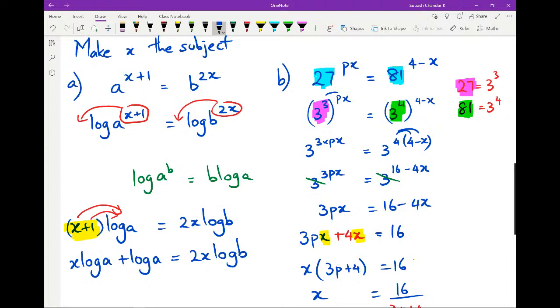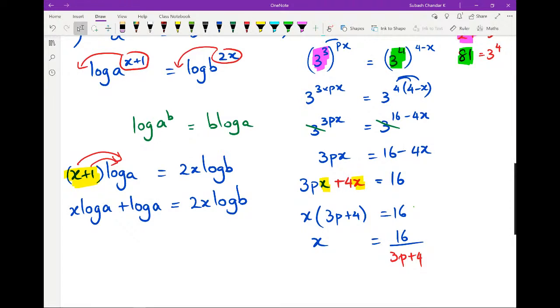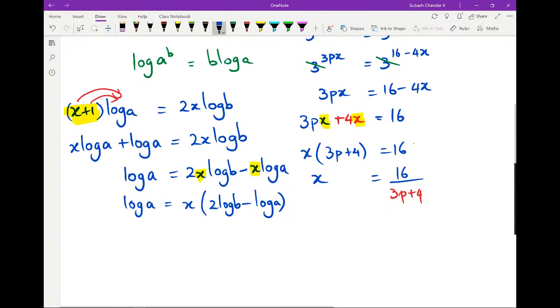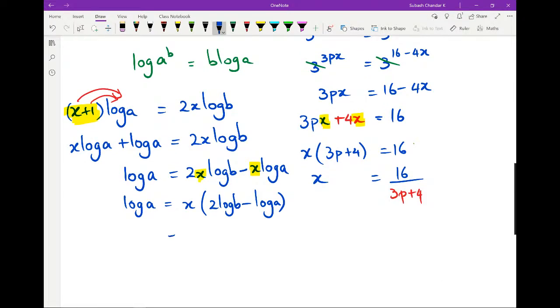Now we're trying to make x the subject, so that means bring all the x's to one side, get rid of everything else that we don't want on the other side. So I'm going to rewrite this as log A equals 2x log B minus x log A. And here, you can see that x is a common factor. So I can actually take x out as a common factor. And I'm going to end up with log A equals x bracket 2 log B minus log A. And now it's just rearranging it. So x is there by itself, and I've got log A divided by 2 log B minus log A.